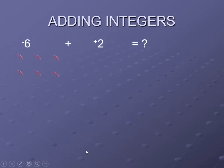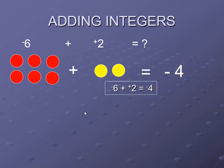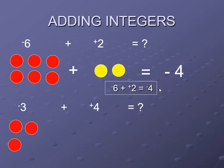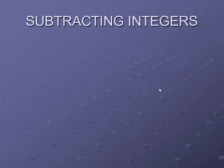Next: minus 6 plus plus 2. Take 6 red coins and 2 yellow coins. Two yellow coins and two red coins cancel to give 0, and the remaining 4 red coins represent minus 4. So the sentence is minus 6 plus plus 2 equals minus 4. Similarly, minus 3 plus plus 4: three red coins and four yellow coins give plus 1.